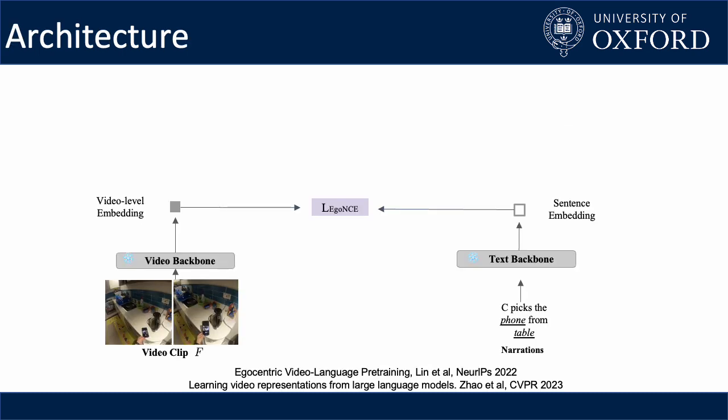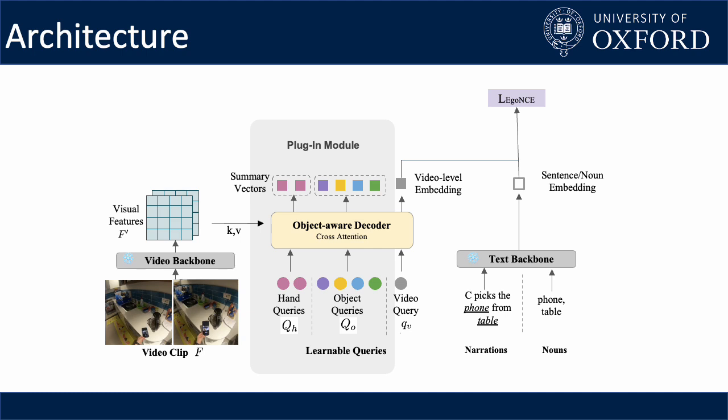In our architecture, we start from a pretrained video-text encoder from a contrastive learning pipeline and keep them frozen. Building on this pipeline, our proposed method adds an additional object-aware module to summarize the video-level object information. The main part of the module is an object-aware decoder, whose input is a set of learnable queries representing hand and object respectively. The queries attend to the visual feature map through a cross-attention mechanism in the decoder, and output a set of hand and object summary vectors as a result.